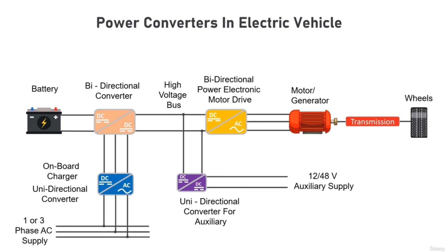To wrap up, we looked at what a power electronic converter is and how power semiconductor switches play a key role in their operation. We learned about different types of power converters based on AC or DC, isolation, and power flow direction. The four key power converters in an electric car are the onboard charger, traction battery converter, auxiliary battery converter, and the motor drive. The motor drive facilitates controlling the voltage, frequency, phase, and current supply to the motor, resulting in four-quadrant operation.